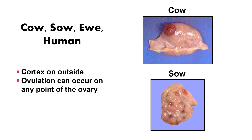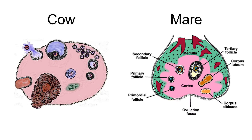For the cow, sow, ewe, and most domestic animals, the cortex is located on the outside and the medulla is located on the inside. The cortex is where the corpora lutea and the follicles develop. For ovulation, it can take place at any point on the ovary. This is a comparison between the layers found in the cow and the mare. For the cow, the ovarian cortex is on the outside and the medulla is on the inside. For the mare, it is reversed — the medulla is on the outside and the cortex is on the inside, where the corpora lutea and follicles develop.